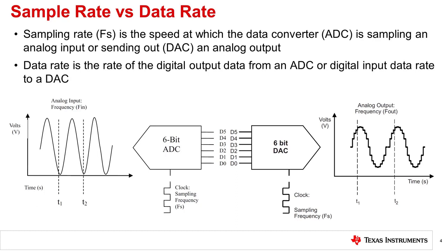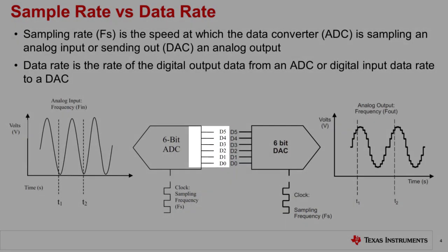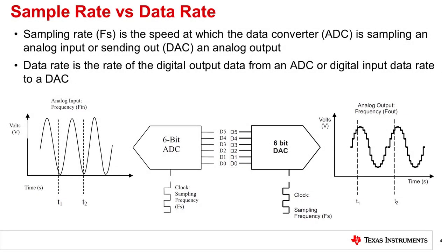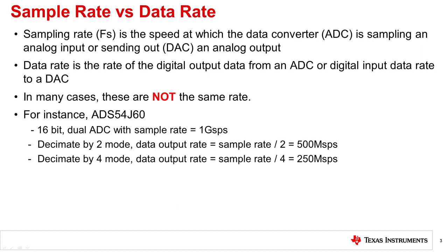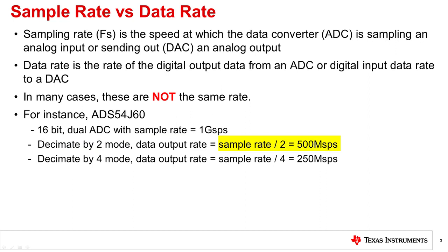A data rate is the rate of the digital output data from an ADC or a digital input data rate to a DAC. In many cases, these are not the same rate as the sample clock. For example, if a user was operating an ADS54J60 ADC in decimation-by-2 mode at a sample rate of 1 gigasample per second, the actual data rate leaving the device will be 1 gigasample per second divided by 2, or 500 megasamples per second. If the user was using decimation-by-4 mode, this would be 250 megasamples per second. Keep in mind that this is the equivalent parallel data rate and not the SERDES rate of the output pins of this device.